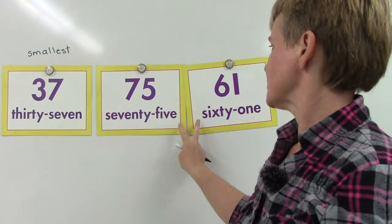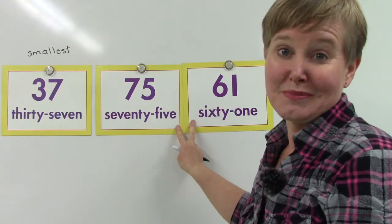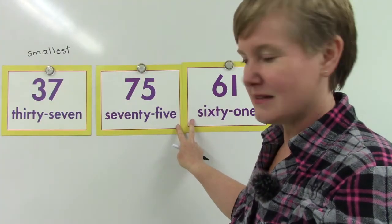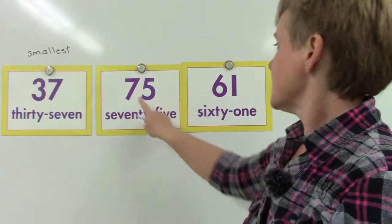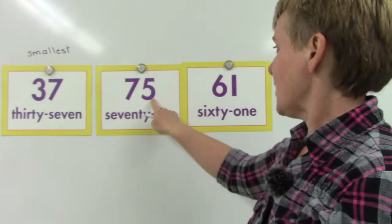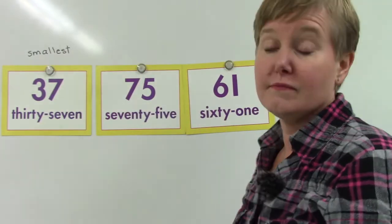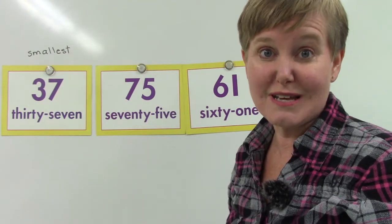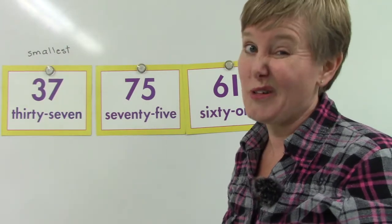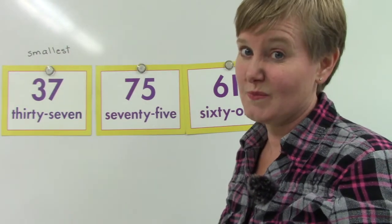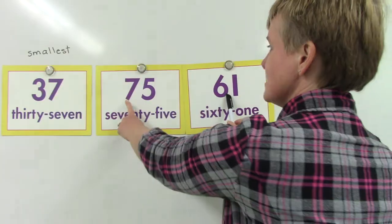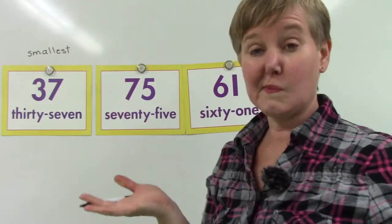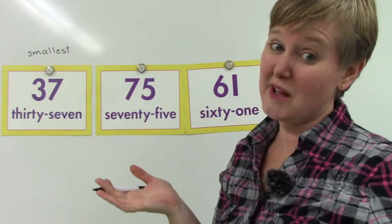We have to look between these two numbers — which one would come next, 75 or 61? We're going to see which one of these two numbers is the smaller of the two, and we're going to look at our tens place. Seven and six.